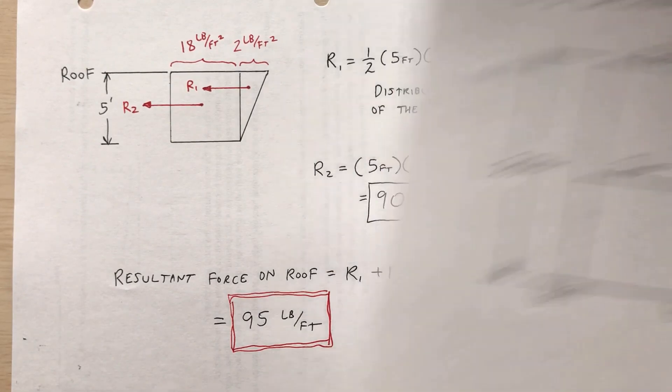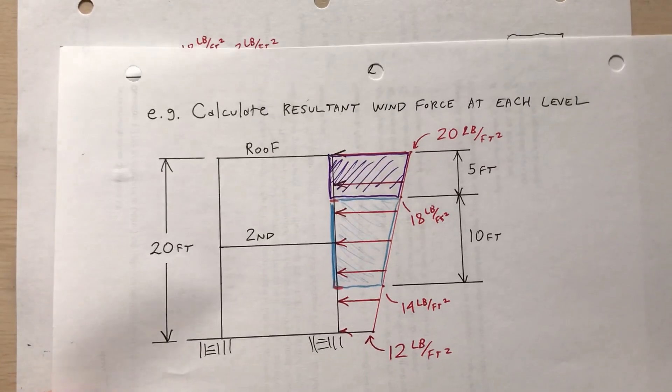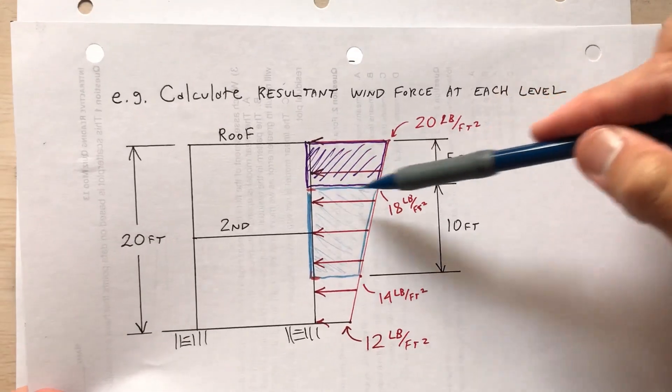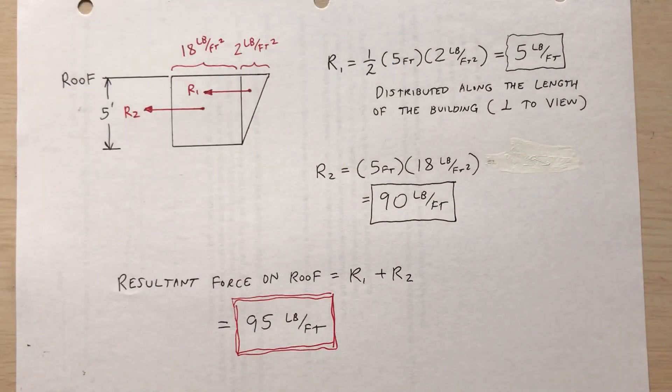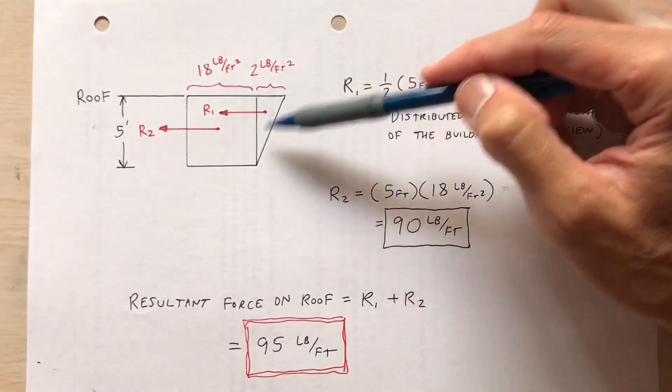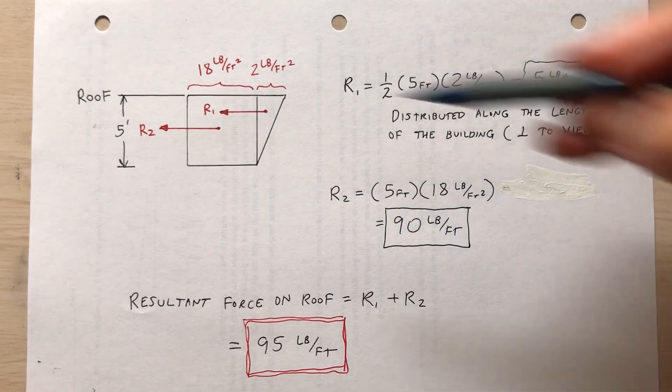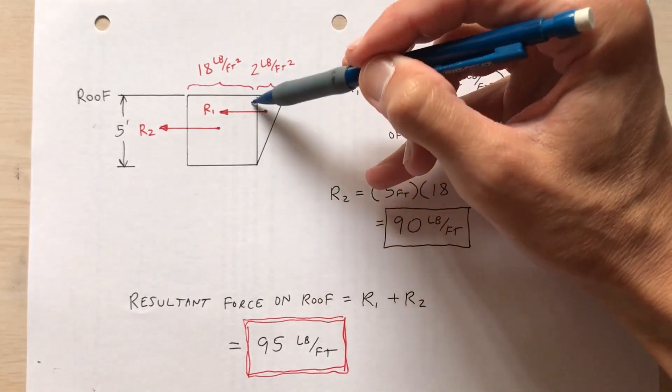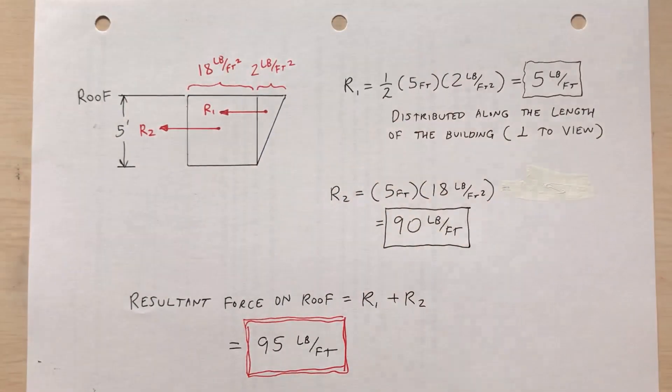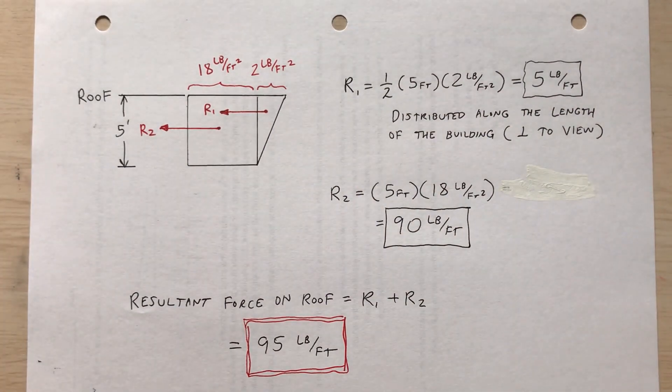So I took this trapezoid, the purple trapezoidal load. The purple trapezoidal load, I drew that separately. So this is the trapezoidal load acting on the roof. I broke it up into a rectangular portion and a triangular portion. So I calculate the resultants of those two.